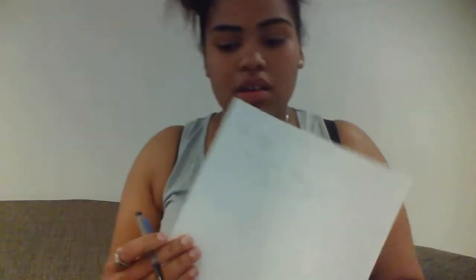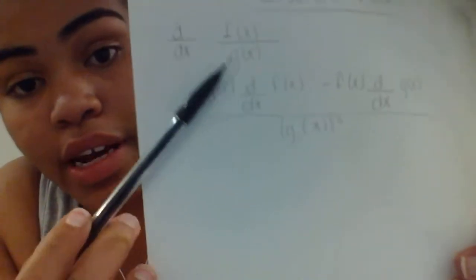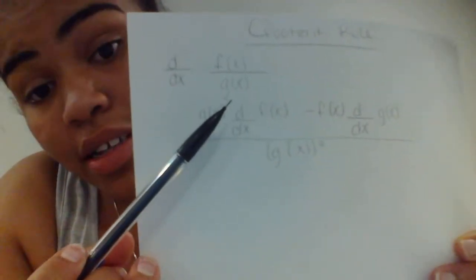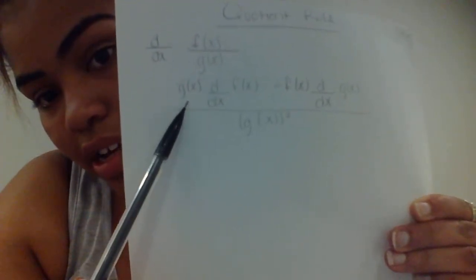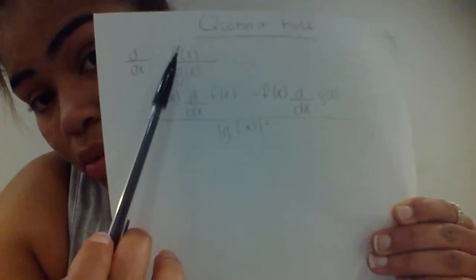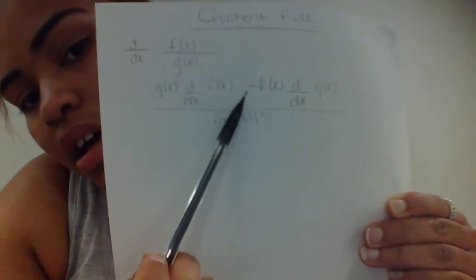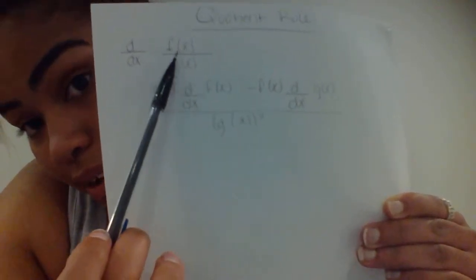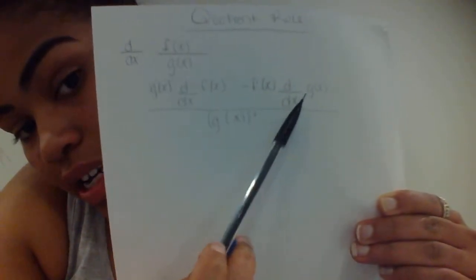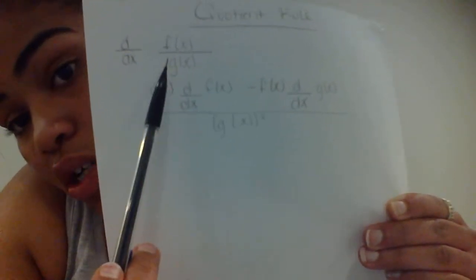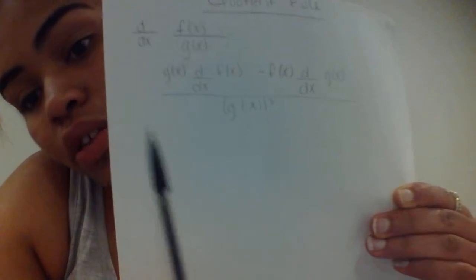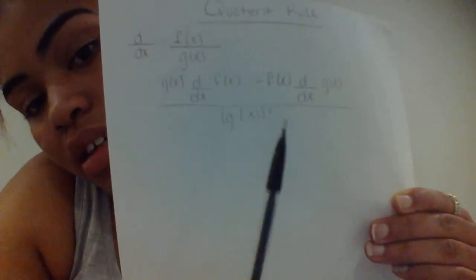Next we have the quotient rule, which is really simple. When you have an x in your numerator and an x in your denominator, you take the denominator times the derivative of the numerator, minus your numerator times the derivative of your denominator, then divide it all by your denominator squared. An easy way to remember it is: low d high minus high d low, divided by low squared.